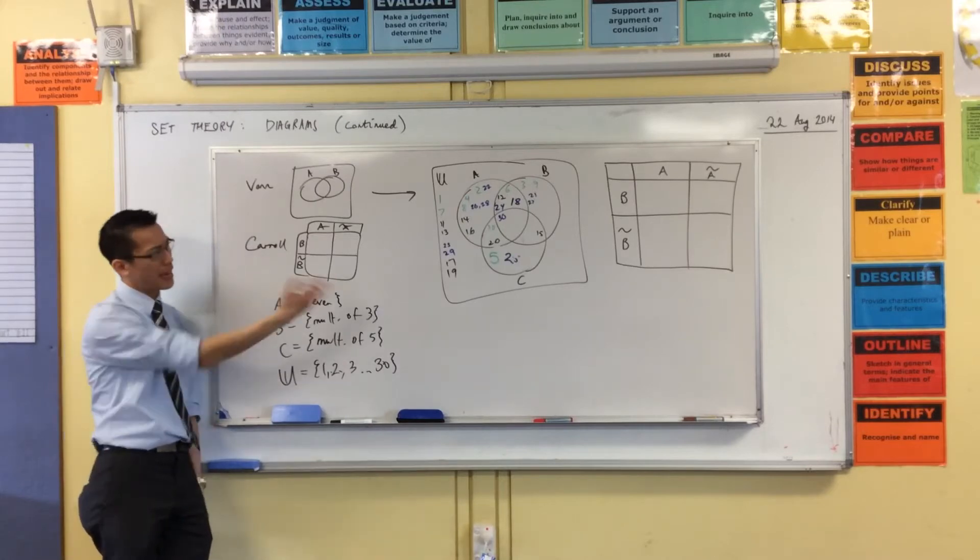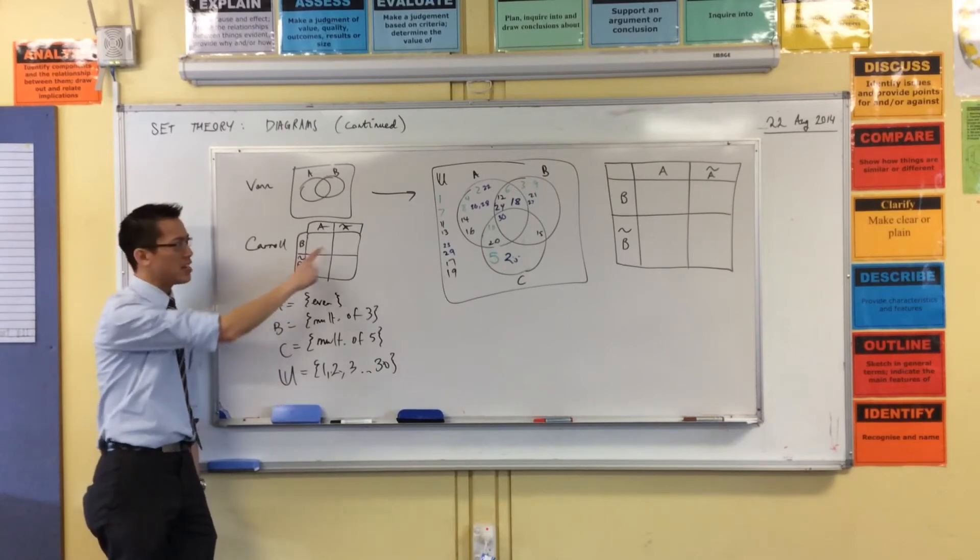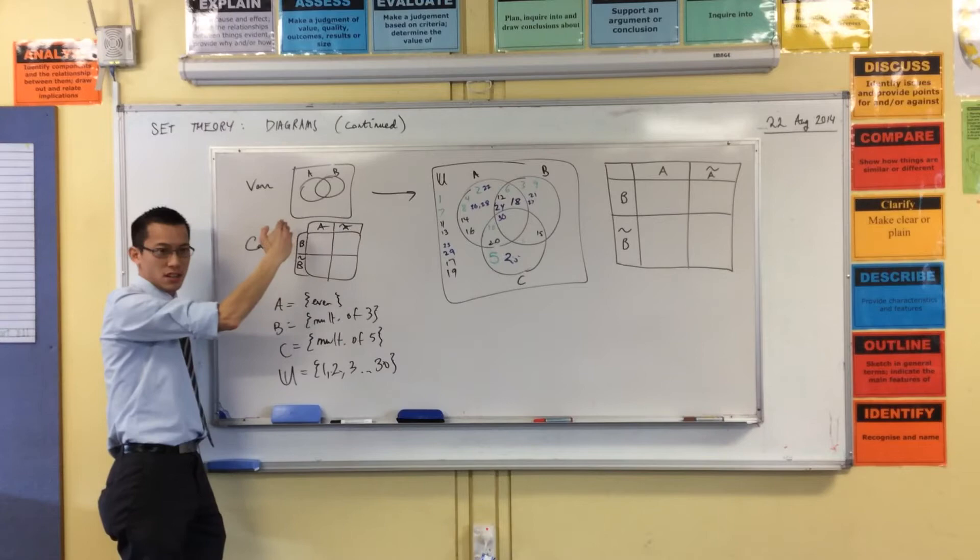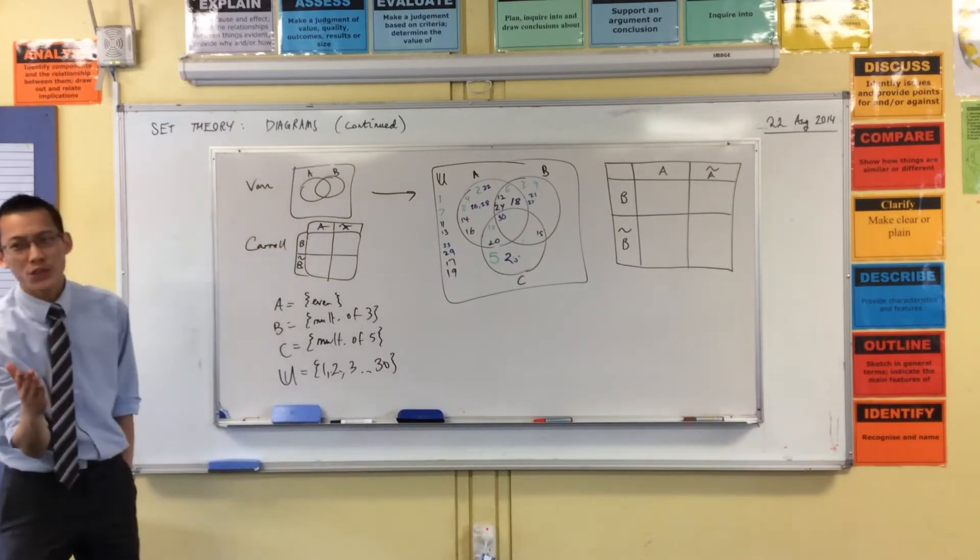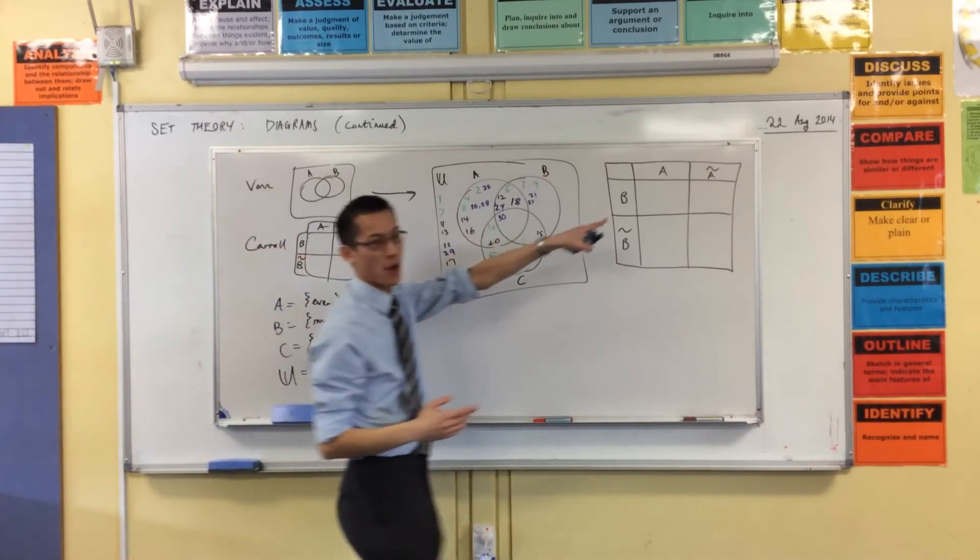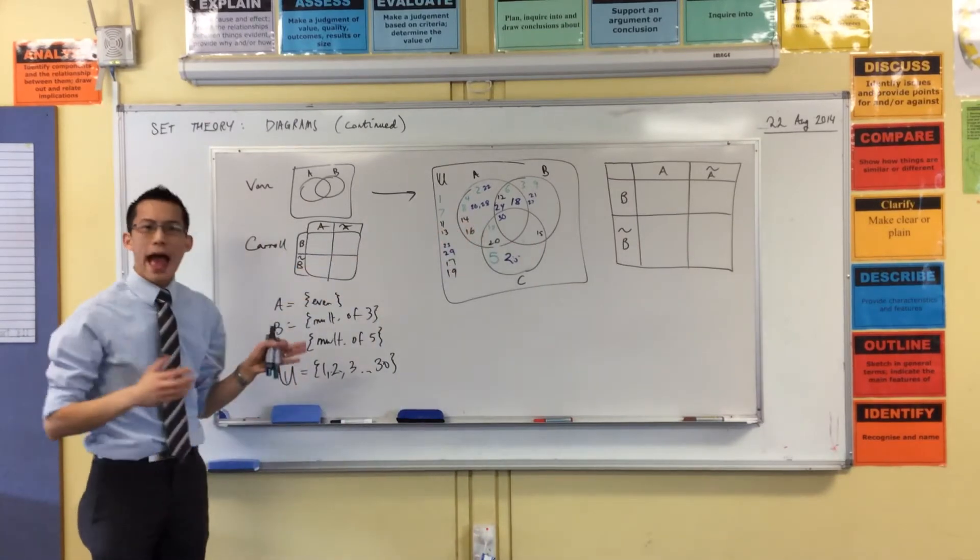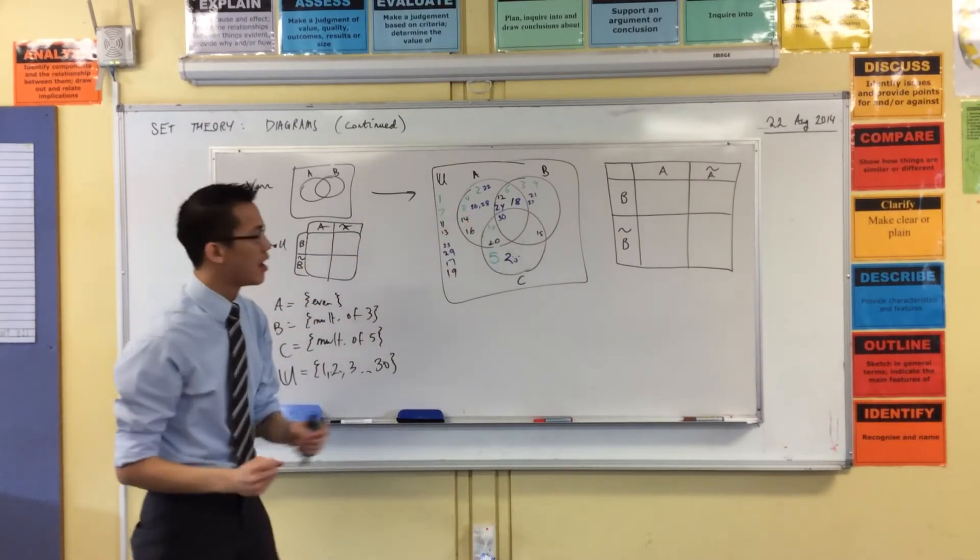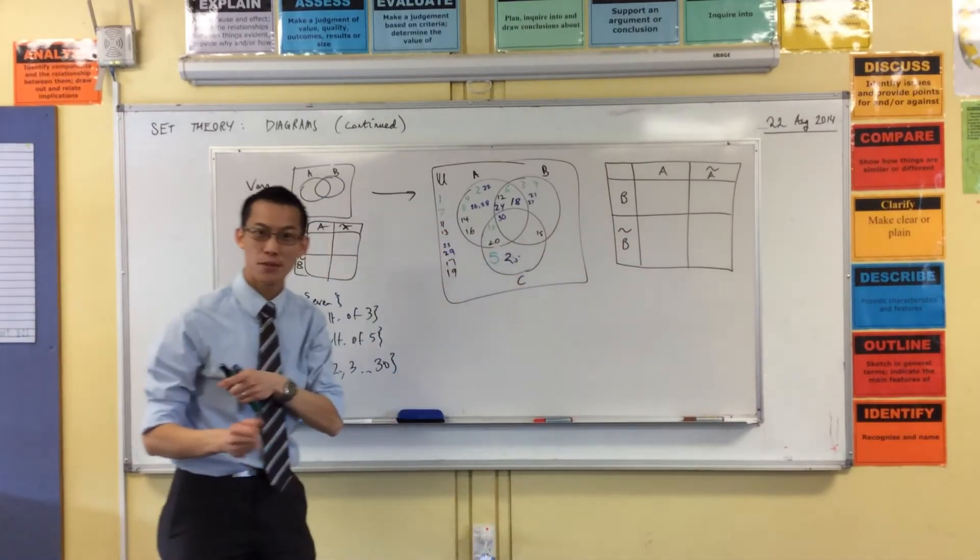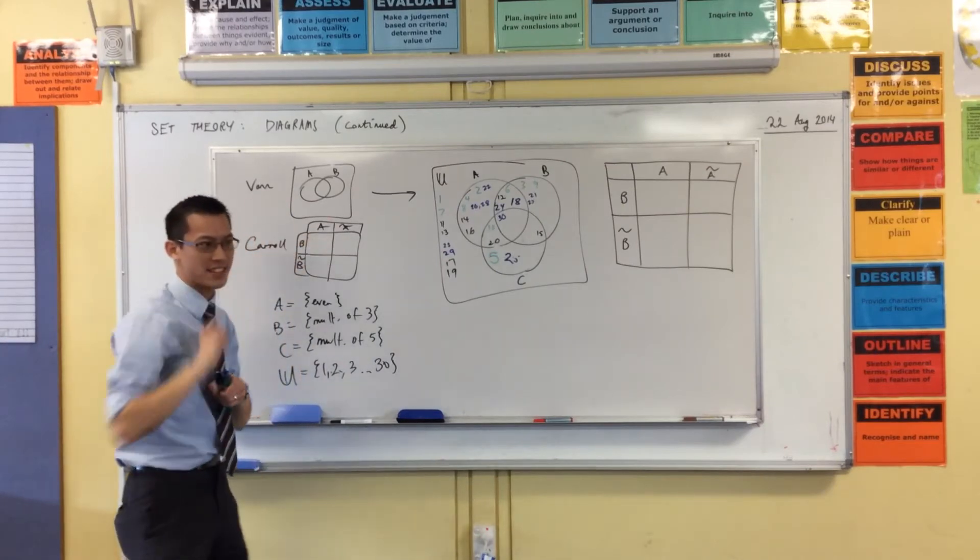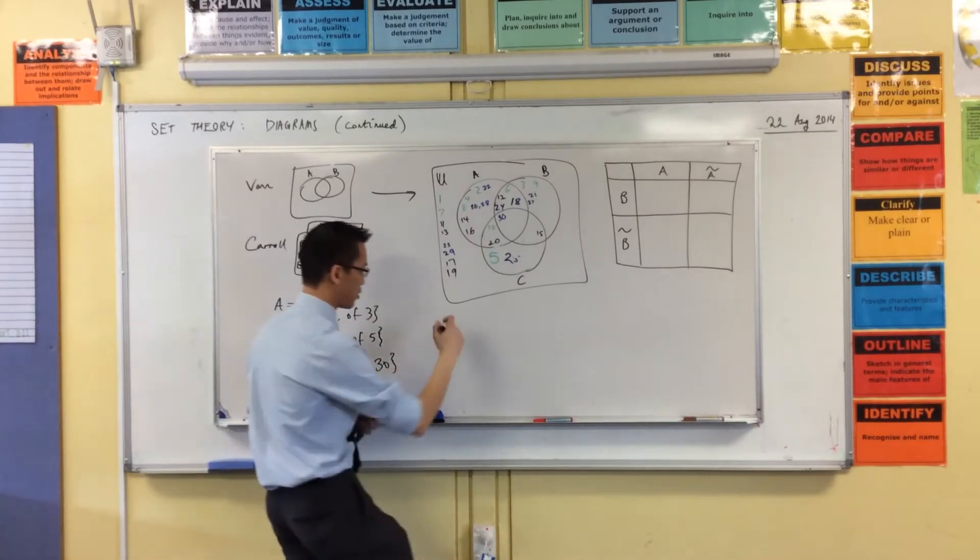But if you wanted to replicate this, these three sets on a Carroll diagram, well, you'd kind of need to, like, you've got one dimension, two dimensions, you've got three dimensions, you'd have to come off the board, wouldn't you? Or do you? So, here's my Carroll diagram over here. Maybe you want to start drawing one as well. It'll need to be big enough to fit 30 numbers in it. How can we modify this two-set Carroll diagram to be able to account for three sets?